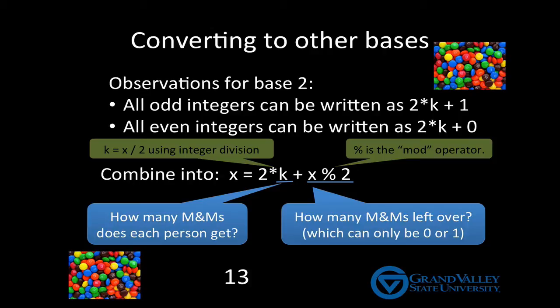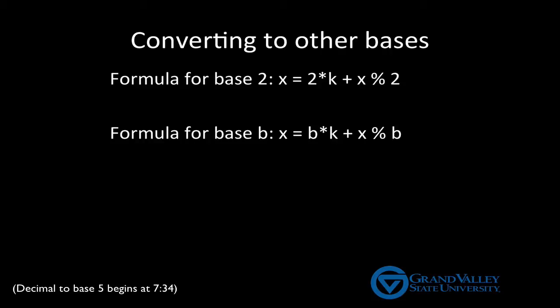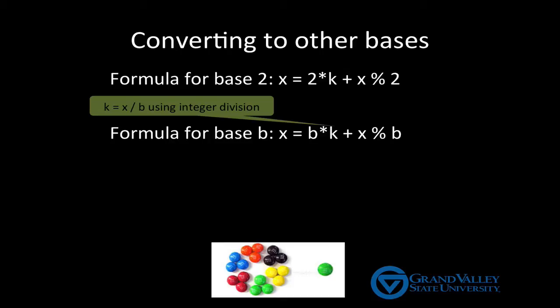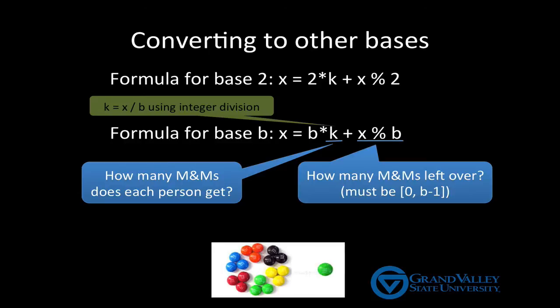Now, as an example, consider we have 13 M&Ms. 13 is equal to 2 times 6 plus 1, which means you each would get 6 M&Ms and there would be one left over. Let's see how we can generalize this combined formula for other number bases. First, we'll take the formula for base 2 and then replace the 2 with a B to represent any arbitrary base. This general formula tells us the same M&M story. If we divide x M&Ms among B people, k tells us how many M&Ms each person gets, x mod B tells us how many M&Ms are left over.